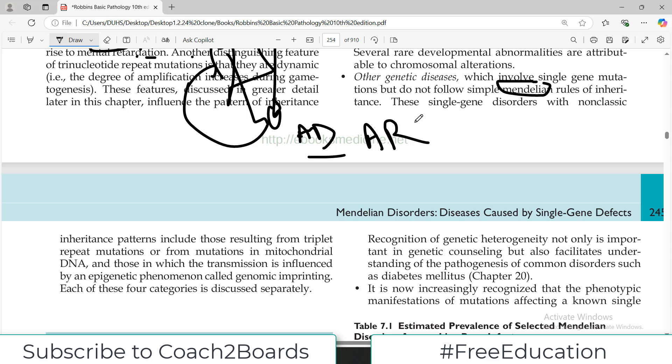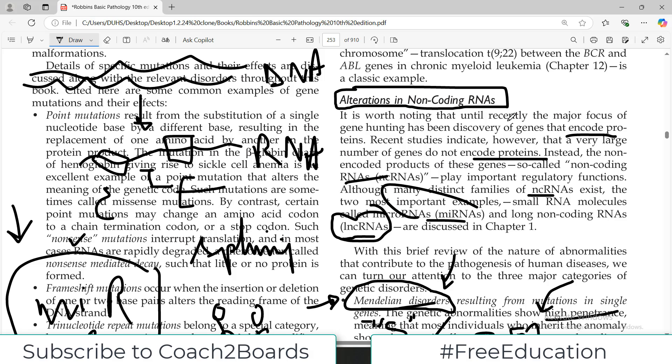Some of the single gene disorders follow Mendelian rules but many of them they don't. So in this category, we will follow all genetic disorders such as Huntington disease. They are single gene disorders usually but they do not follow Mendelian principles. So we will also study all these categories of genetic disorders.